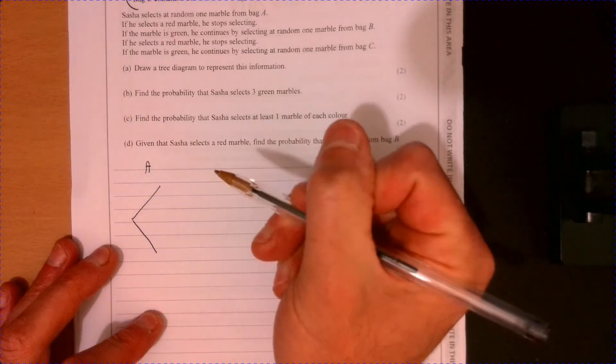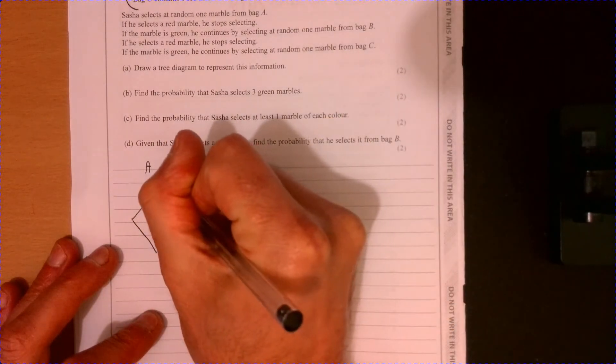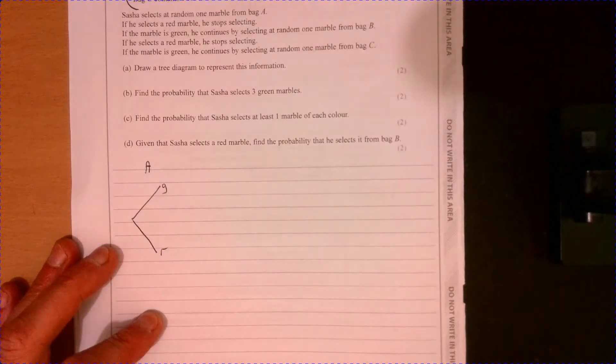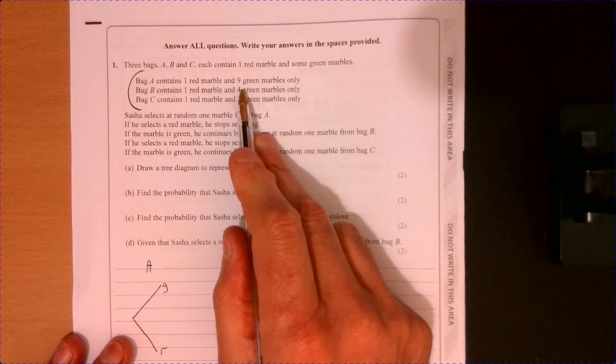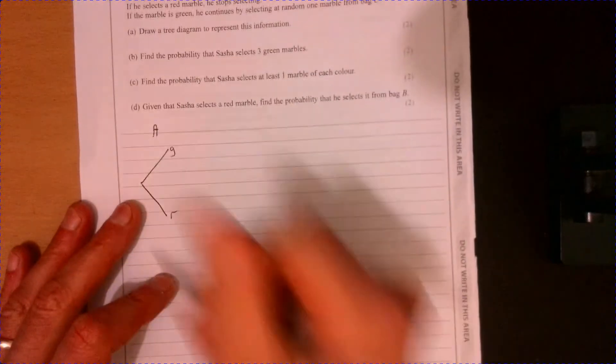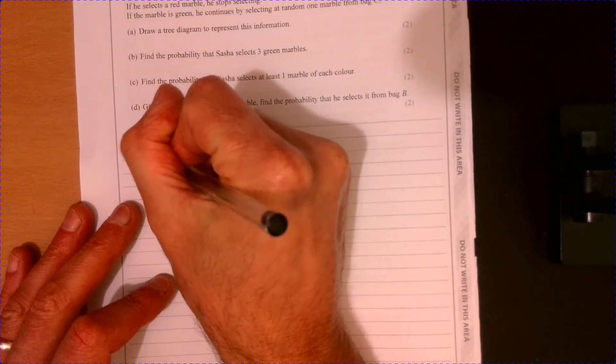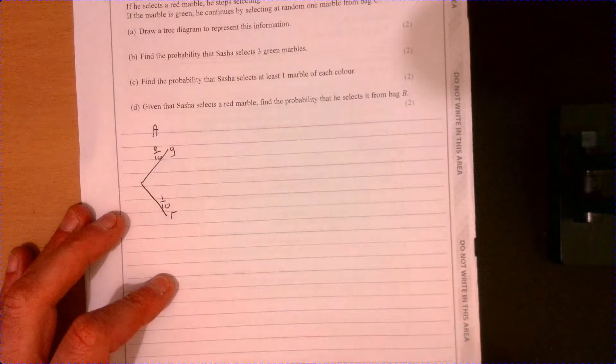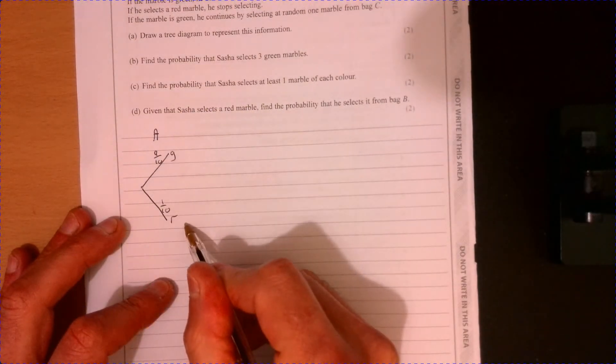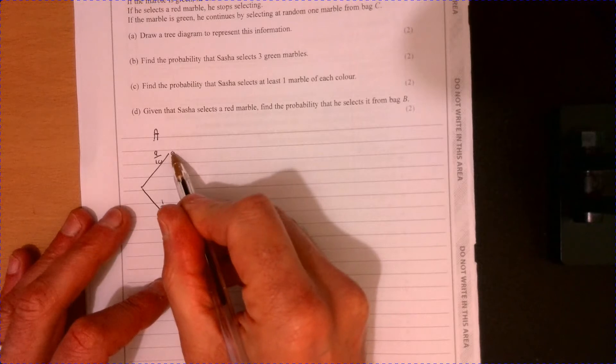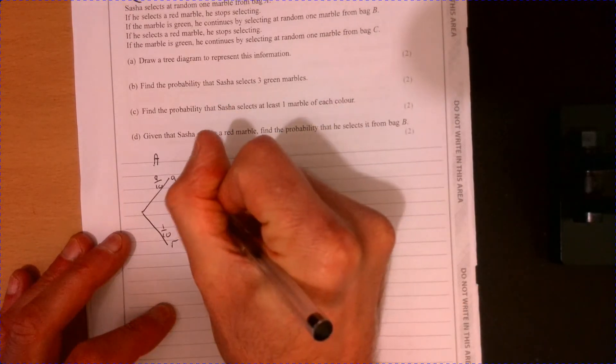So we might get a green one, we might get a red one. So the probability of getting green is nine over ten, and a red one is one over ten. So we stop here, but we would carry on if we got green. We keep going until we get a red one.